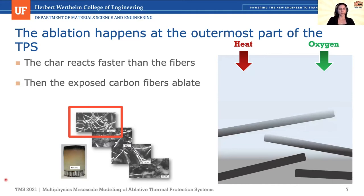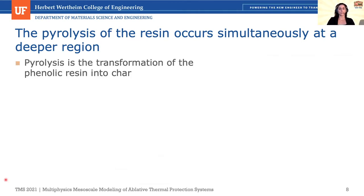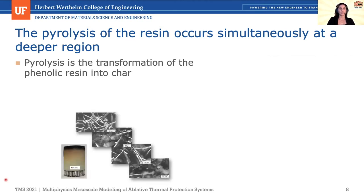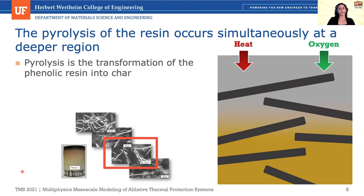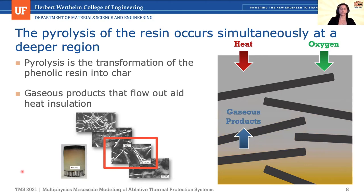The second process is pyrolysis — the transformation of the phenolic resin into char. It happens in the middle section of the sample. We have char, fibers, and resin. The resin goes through a phase transformation driven by chemical reactions and transforms into char in the presence of heat and oxygen at lower temperatures than ablation. A beneficial aspect is that the gaseous products generated by this endothermic reaction help cool the material and are essential for its insulation properties.